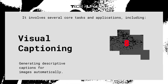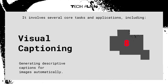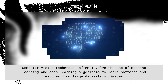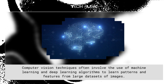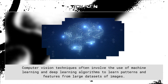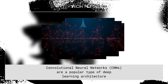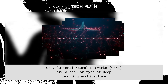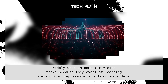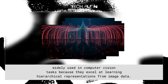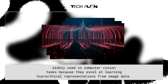Visual captioning involves generating descriptive captions for images automatically. Computer vision techniques often involve the use of machine learning and deep learning algorithms to learn patterns and features from large datasets of images. Convolutional neural networks are a popular type of deep learning architecture widely used in computer vision tasks because they excel at learning hierarchical representations from image data.